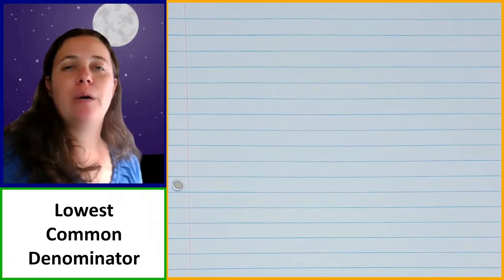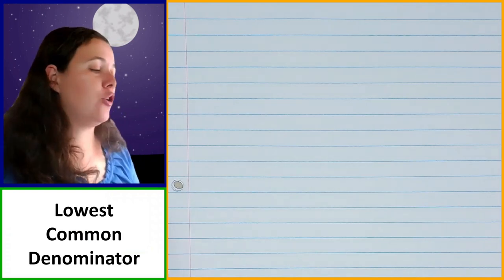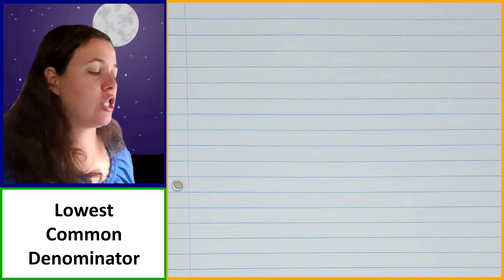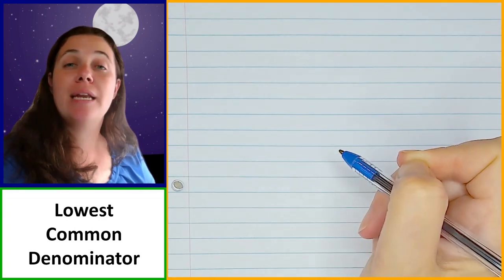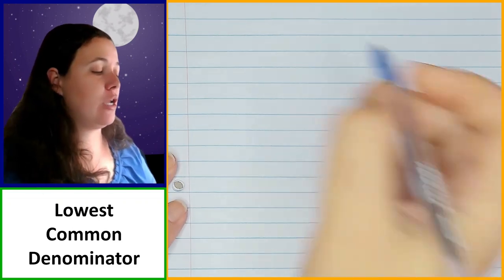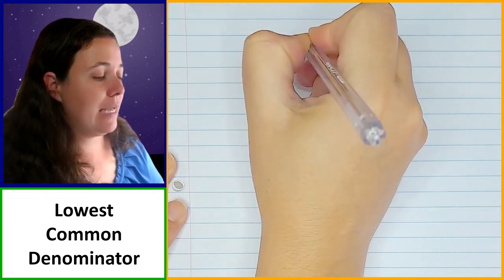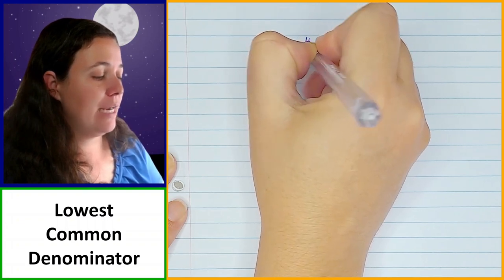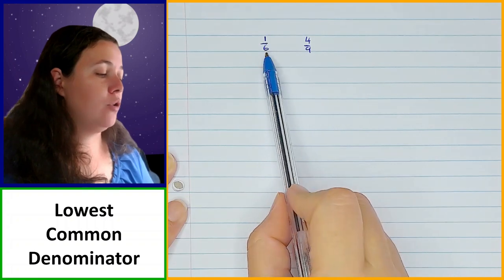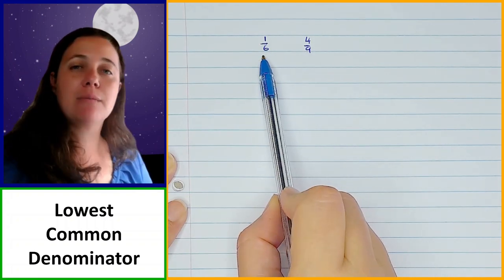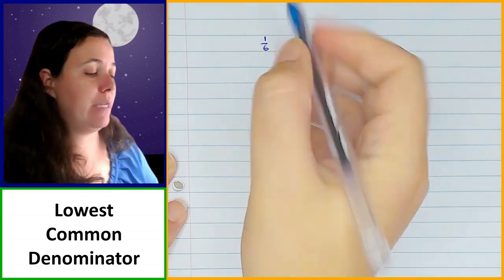The first is just reminding you about the LCD, or the lowest common denominator. Remember, we learned in the last lesson that the lowest common denominator is the lowest number that all denominators can divide into evenly without any remainder.